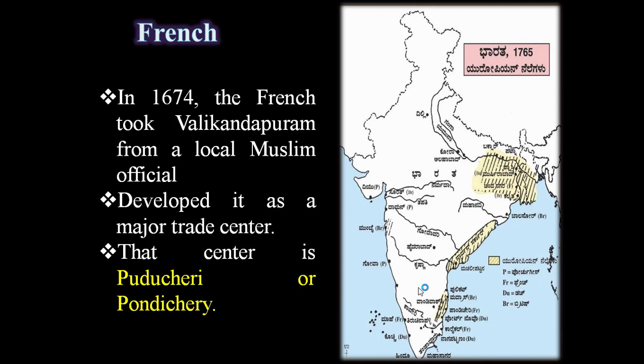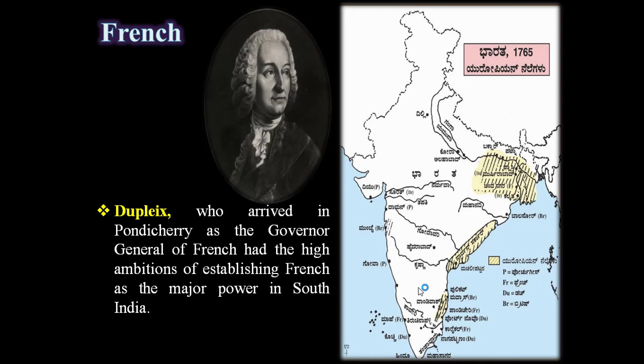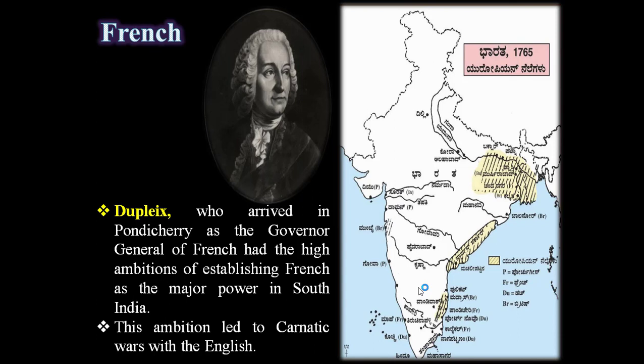That center is today called Puducherry or Pondicherry — the earlier name was Valikondapuram, given by local Muslims to the French. From the French side, Dupleix arrived in Pondicherry as the Governor General of the French, and had high ambitions of establishing French as the major power in South India. This ambition led to the Carnatic Wars with the English.